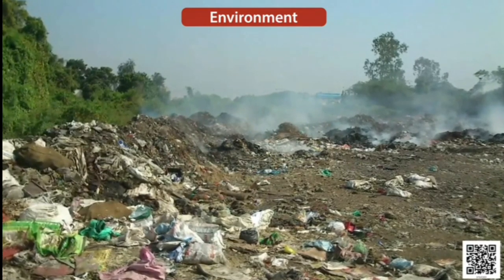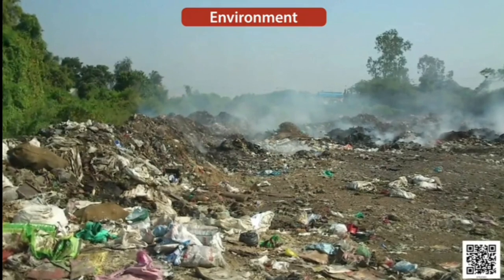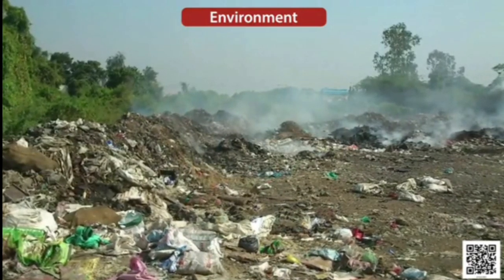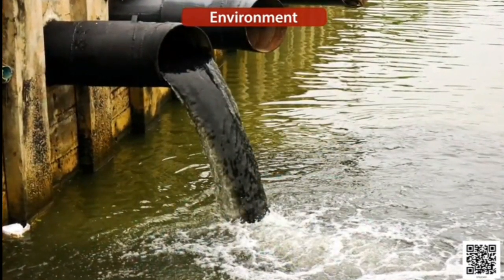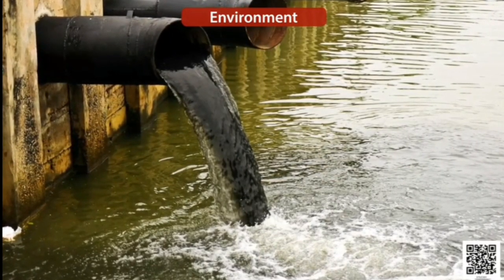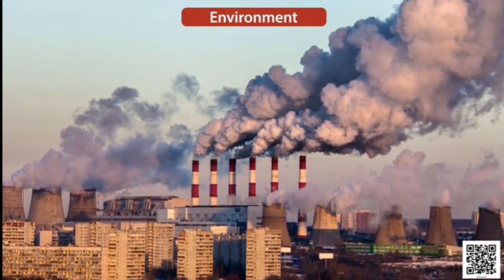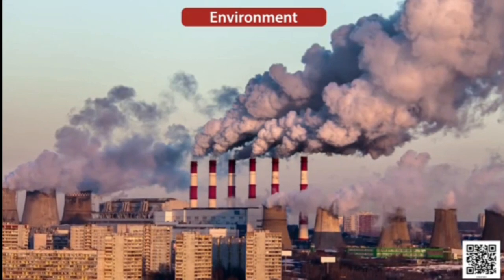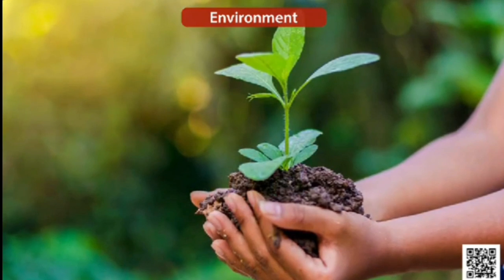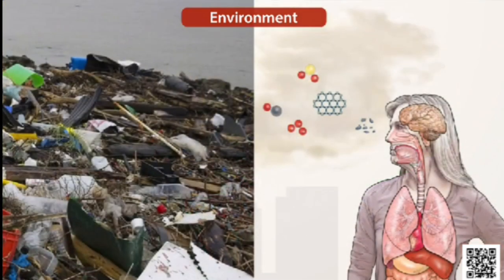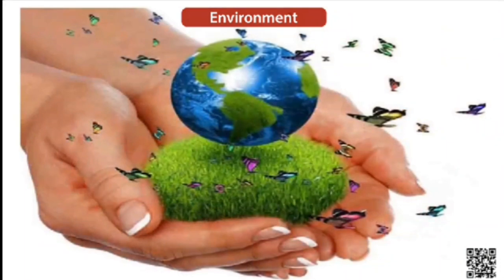If soil is polluted, the useful microorganisms in it will die, the fertility of the soil will be lost, and crop production will decrease. If water is polluted, it must be purified before drinking, which requires resources. If air is polluted, respiration becomes an issue and survival of life will be under threat — air pollution leads to many respiratory diseases. Environmental pollution will affect all life on earth and should be reduced as far as possible. Our survival depends on this environment, so care should be taken and its balance should be maintained.